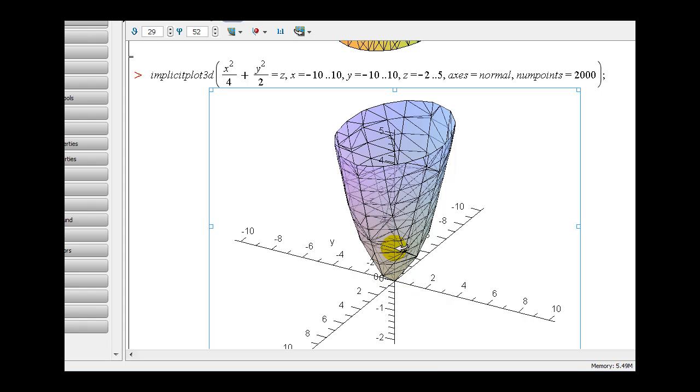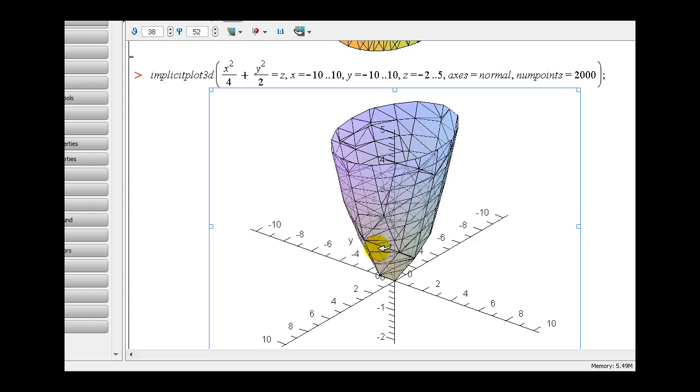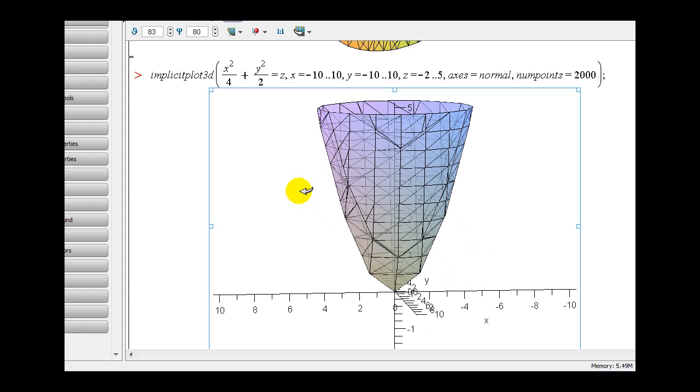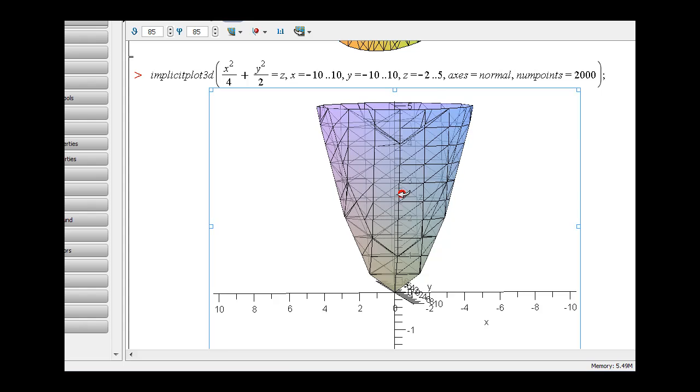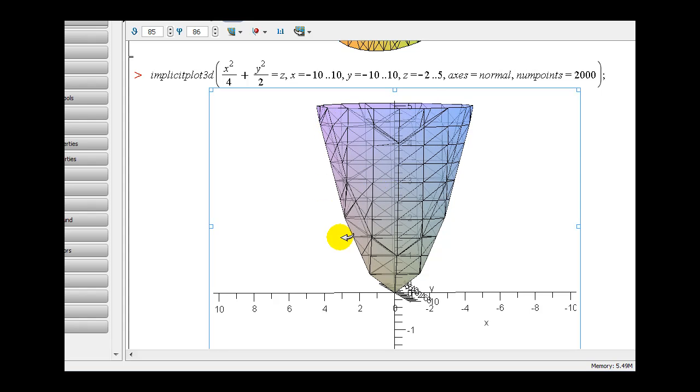Now if we look at just the x, z plane, it would look something like this. And again you can see the parabola, or the parabolic trace.